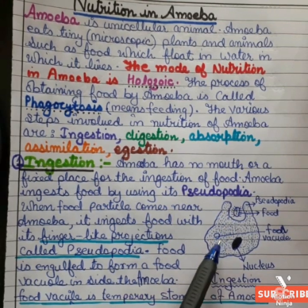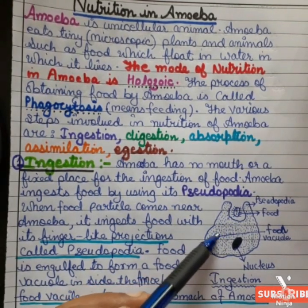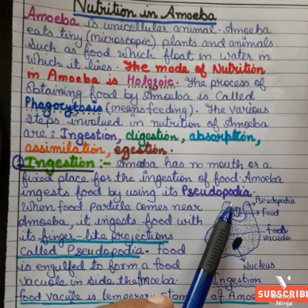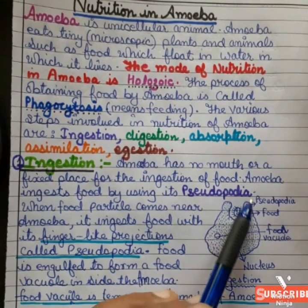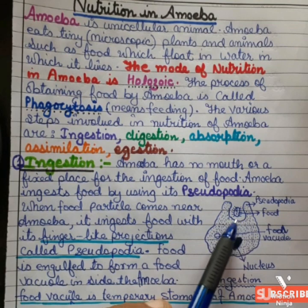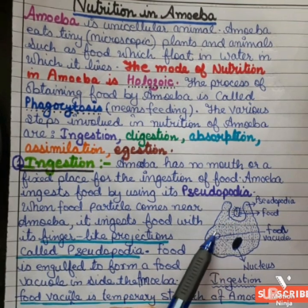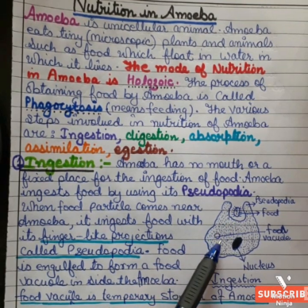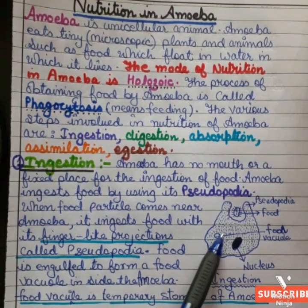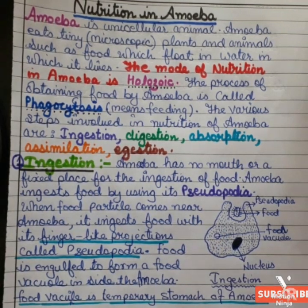The food vacuole is a temporary stomach of the amoeba. The food engulfed by the pseudopodia — these finger-like projections — is enclosed in the vacuole. These vacuoles serve as temporary stomachs of the amoeba. This completes the ingestion process.